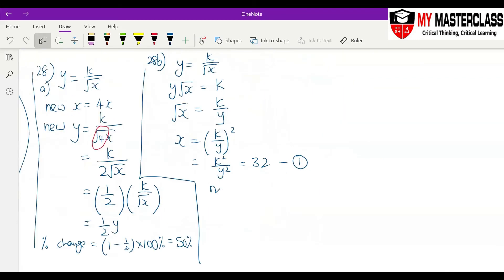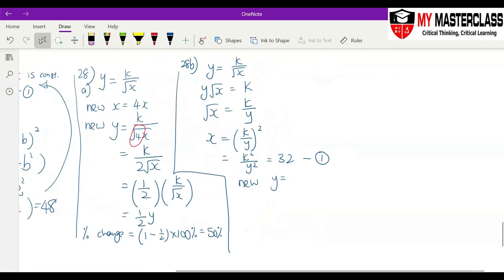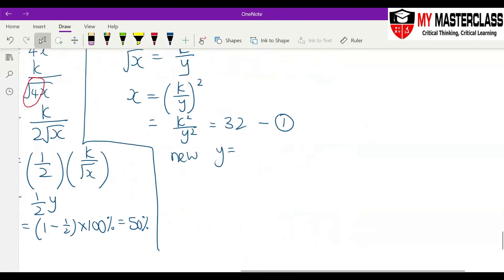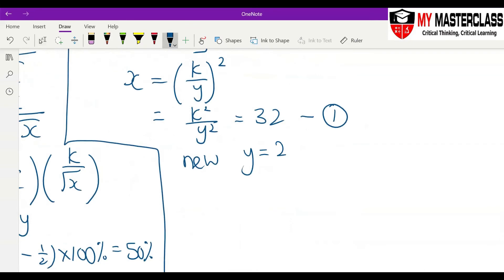So the new y, because they say that y double, right? So new y is equal to 2y. So now you put into your new x. New x equals to k square over 2y bracket square, like that.